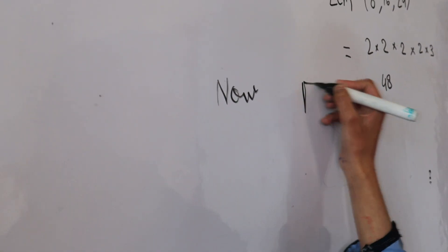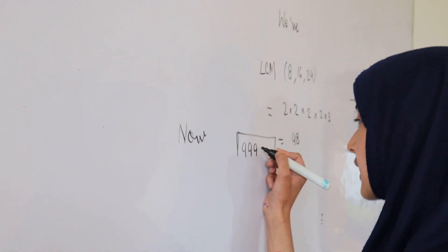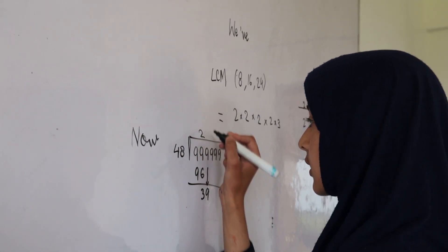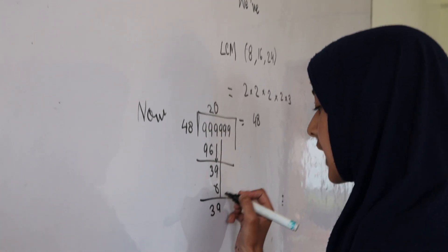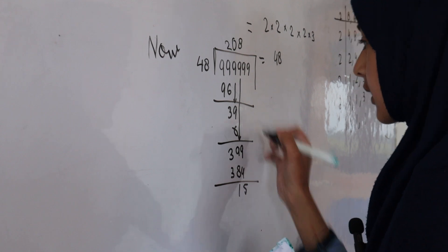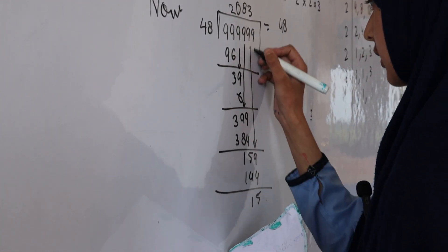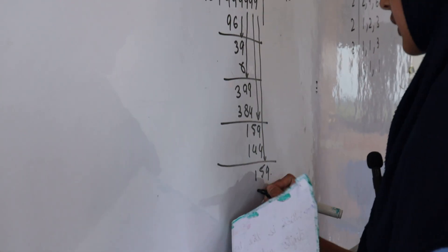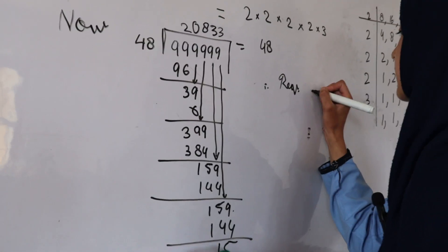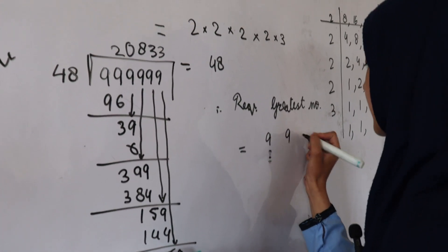Now we have to divide. As we know, the greatest 6-digit number is 9,99,999. So we will divide 9,99,999 by 48. Working through the long division: 48 × 2 = 96, 48 × 8 = 384, 48 × 3 = 144, 48 × 3 = 144. The remainder is 15. Therefore, the required greatest number is equal to 9,99,999 minus 15.